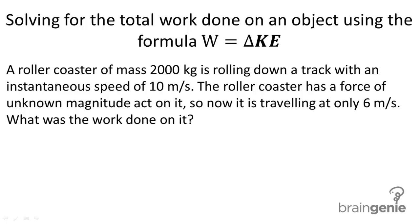Solving for the total work done on an object using the formula W equals delta KE. A roller coaster of mass 2,000 kilograms is rolling down a track with an instantaneous speed of 10 meters per second. The roller coaster has a force of unknown magnitude acting on it, so it is now traveling at only 6 meters per second. What was the work done on it?